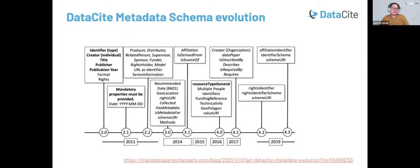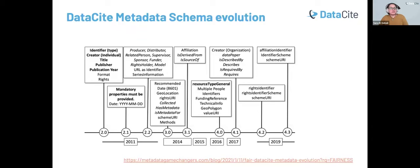Some of the main areas of development include the expansion of the variety of resources that we can describe, such as with the resource type general categories. The growth of the schema has also made it easier to diversify the kinds of things that can be connected using the metadata, such as related identifiers and relation types. This enables users to more efficiently capture deeper links within the metadata structure and a wider range of resources, including new source type generals we'll look at today.